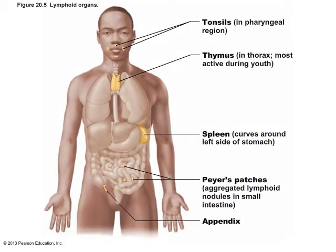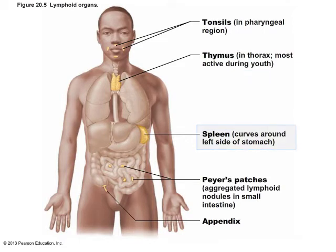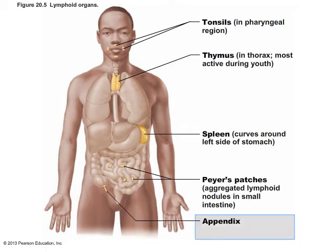Although lymph nodes are probably the most numerous lymphatic organs in the body, they are not the largest. Larger lymphatic organs include the tonsils, the thymus located around the heart, the spleen, Peyer's patches found within the intestine, and finally the appendix.